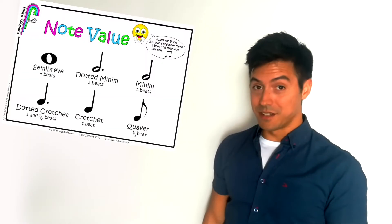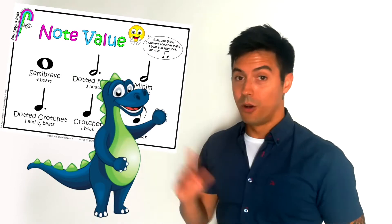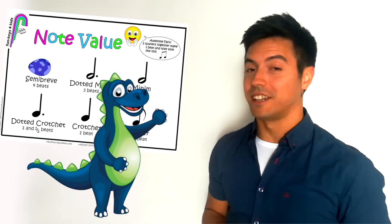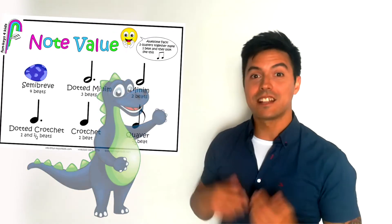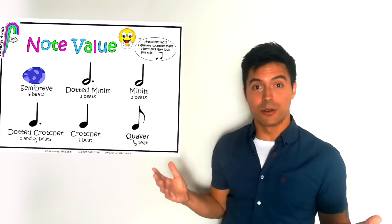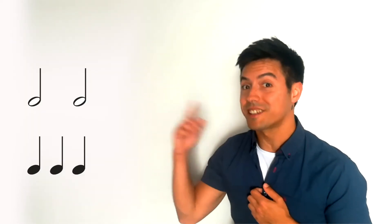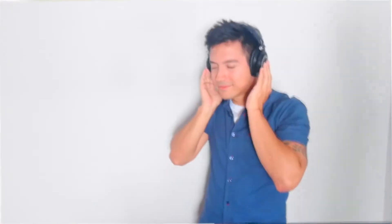Learn to identify these symbols. No, the first one is not a dinosaur egg lying down — it's a musical note. You will be able to hear the difference between these sounds and find them in your favorite songs.